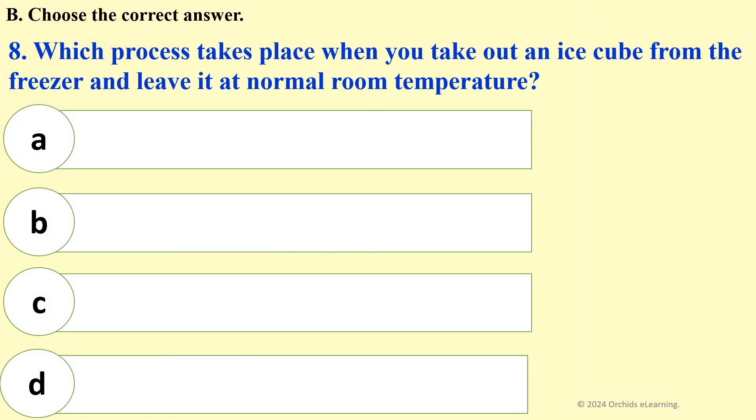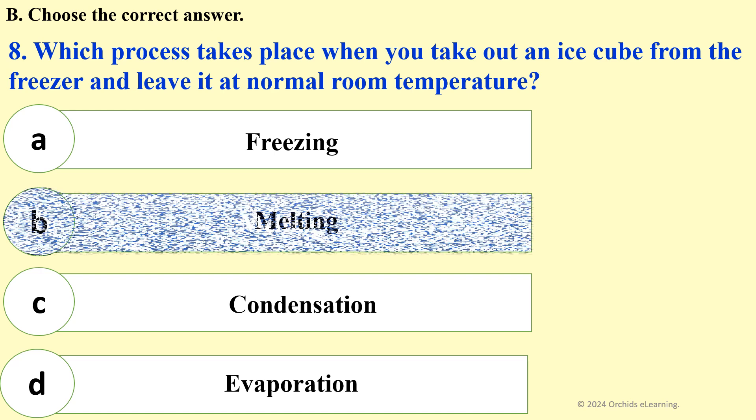Which process takes place when you take out an ice cube from the freezer and leave it at normal room temperature? Answer: D, Melting.